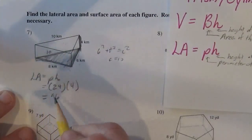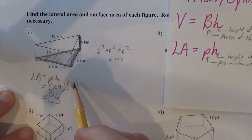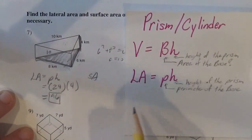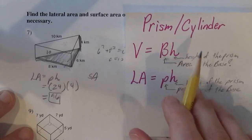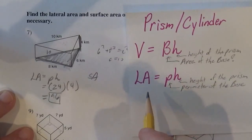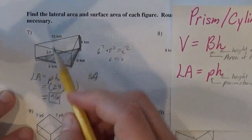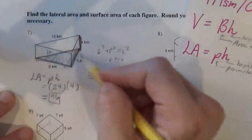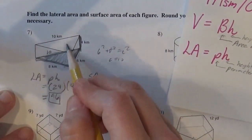And then they want the total surface area. Now notice that on my formula sheet I don't have a formula for total surface area, because I think that's silly. My lateral area just found me the area around the sides without the two bases.